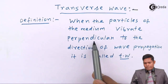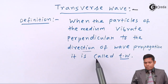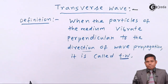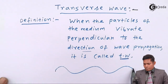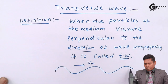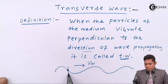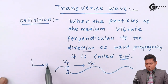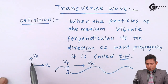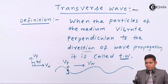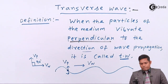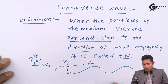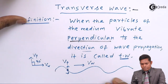Where the particles of the medium vibrate perpendicular to the direction of wave propagation, it is called a transverse wave. That means if a wave moves in one direction, that is the velocity of the wave, and the particles vibrate up and down, they make an angle of 90 degrees. Therefore, when the particles of the medium vibrate perpendicular to the direction of propagation of the wave, it is called a transverse wave. Now we will write the characteristics of transverse wave.